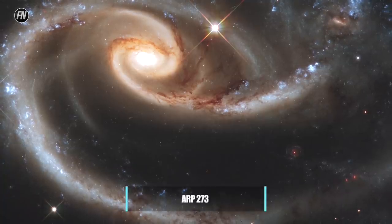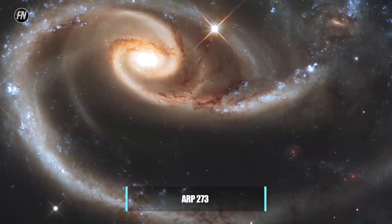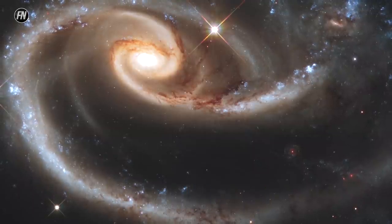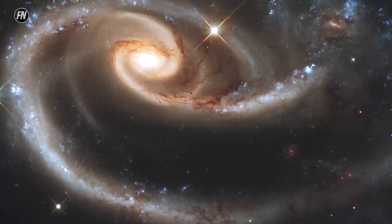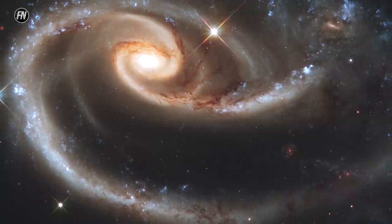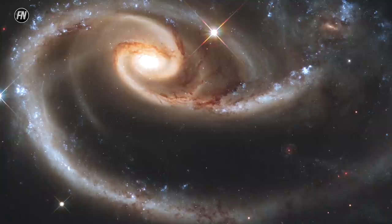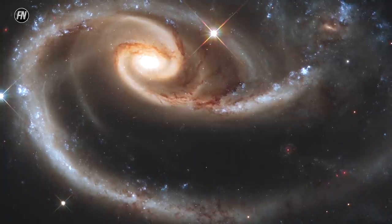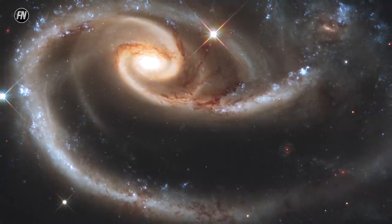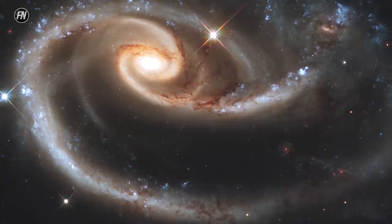ARP 273. The spiral structure of ARP 273 is highly irregular and lopsided, forming a rose shape. This is due to the fact that a very small companion galaxy below it is exerting gravitational force on the trailing arms. Eventually, the larger ARP 273 will absorb its tiny neighbor.